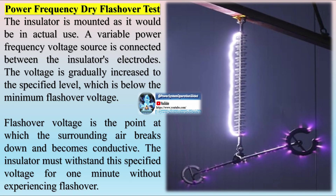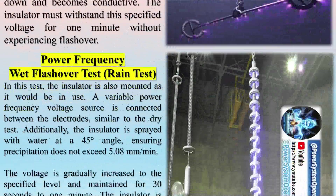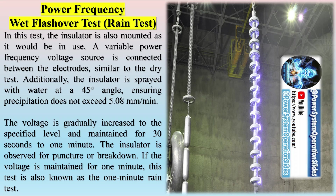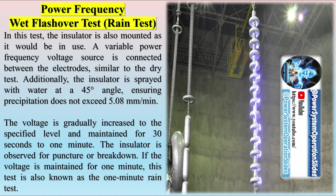The proper functioning of transmission or distribution lines heavily relies on the effective performance of insulators. A high-quality insulator must possess strong mechanical strength to endure mechanical loads and stresses, and high dielectric strength to withstand operating and flashover voltages. It should also be free from pores or voids that could cause damage. To ensure insulators perform as expected, they must undergo various tests. The following types of tests are conducted on overhead line insulators: first, flashover tests; second, performance tests; third, routine tests.